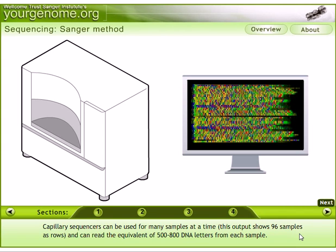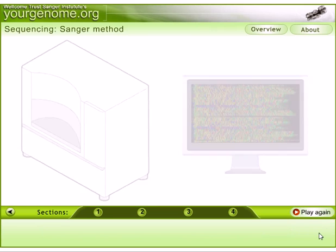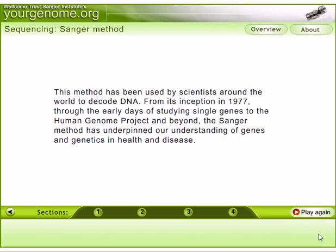Capillary sequencers can process many samples at a time — this output shows 96 samples or rows and can read the equivalent of 500 to 800 DNA letters from each sample. This method has been used by scientists around the world to decode DNA, from its inception in 1977, through the early days of studying single genes, to the Human Genome Project and beyond. The Sanger method has underpinned our understanding of genes and genetics in health and disease.